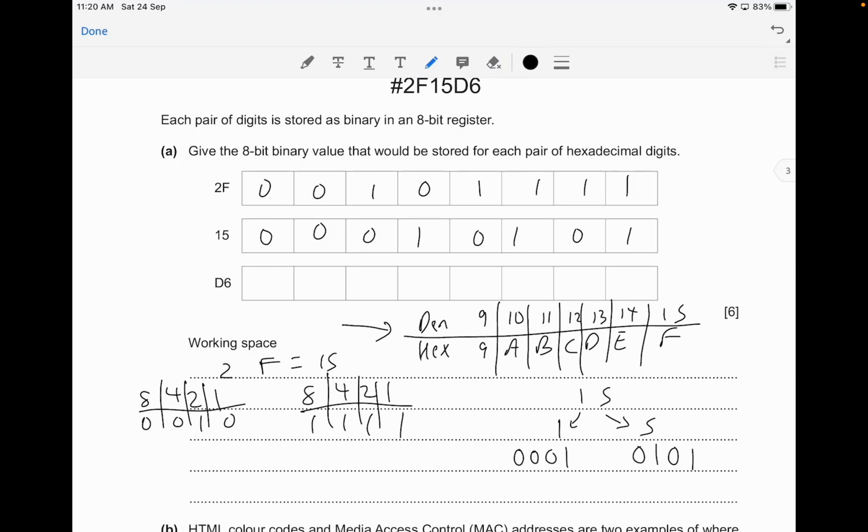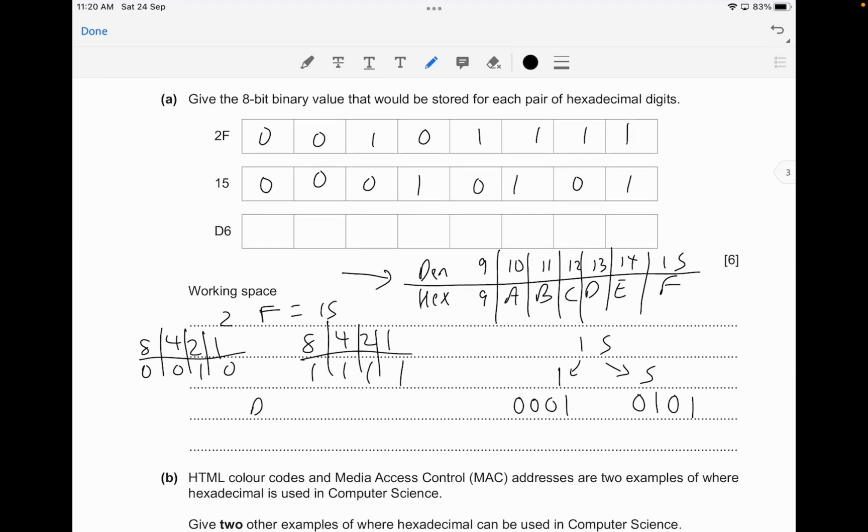D6, you have to do the same repetition. I'm going to raise this so that we can see how to convert D6. Split these values into D and 6. We know that D is equivalent to 13 on the table. 13 with 8-4-2-1 as a nibble: 13 is going to be 1101 (8 plus 4 is 12, plus 1), and 6 is going to be 0110. The answer is 11010110.